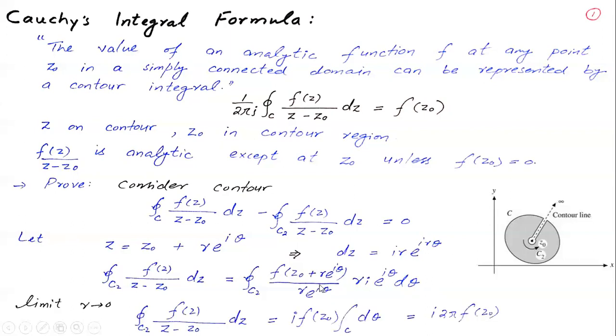If you apply r approaches 0, this term will be 0 and you will have f(z0) constant. You get iota times f(z0), and the integration of dθ is 2π. So 2πi*f(z0) equals the contour integral, which is exactly the result.